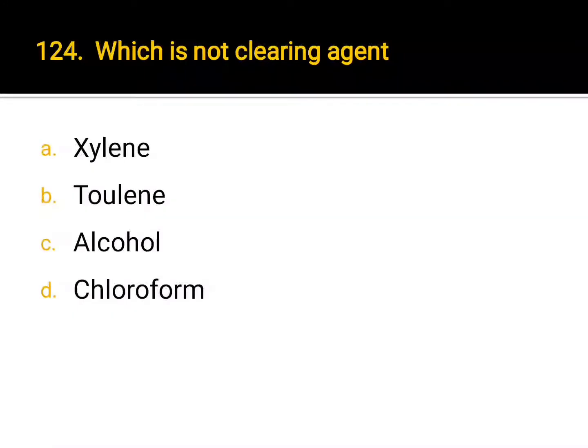Which is not a clearing agent? A. xylene, B. toluene, C. alcohol, D. chloroform. Correct answer: C. Alcohol.